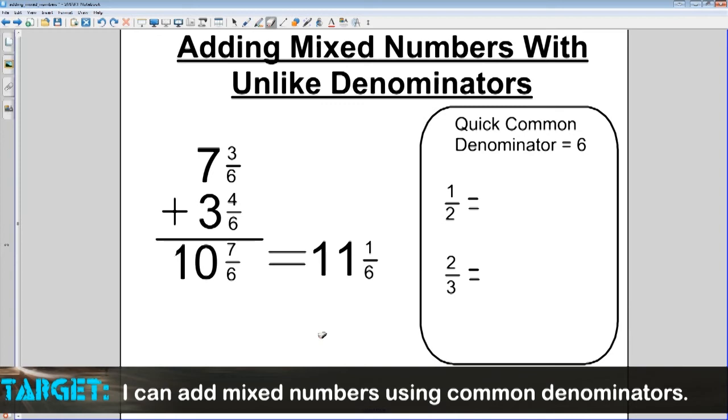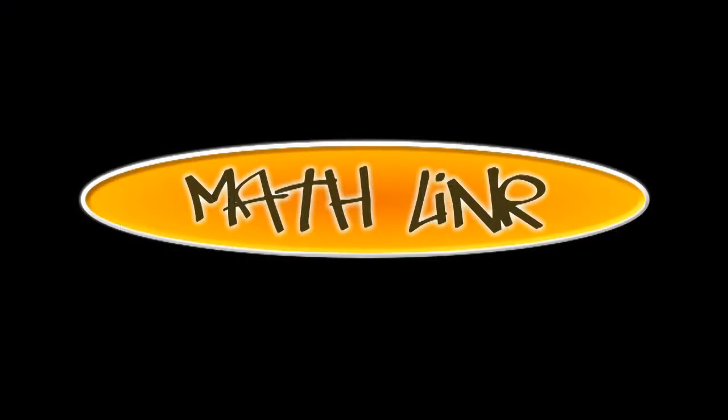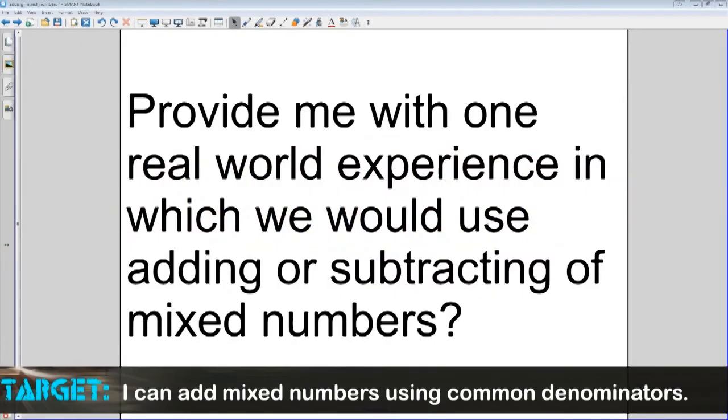Now, we're not done. It's time for that link. So it's time to get started with the math link. And just a reminder, put your answer in the comments of whatever the math link is. Or bring it to me if you're in my classroom the next day. And we'll go over it. And we'll look at who's got the answers. And we'll give you some kind of notice, acknowledgement for getting it. So let's get started on this math link. And today's math link. Provide me with one real-world experience in which we would use adding or subtracting of mixed numbers. So a real-world experience. Start saying that five times fast. In which we would use adding or subtracting of mixed numbers.